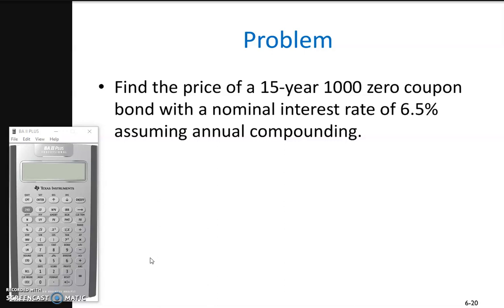Here, m equals 1, therefore the periodic interest rate is 6.5% divided by 1, which equals 6.5%, giving us an I/Y equal to 6.5. Let's put our values into the financial calculator. I'm using the Texas Instruments BA II Plus.